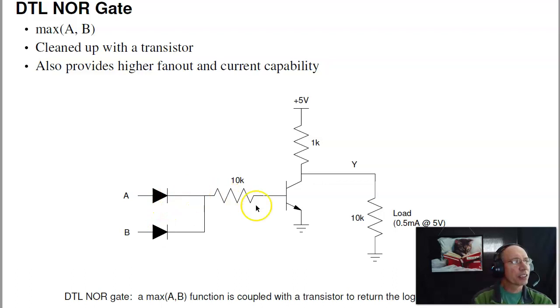If they're both false, there's no current flow, the transistor is off, and the output is 5 volts, or a little bit less if you have a load.